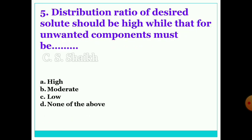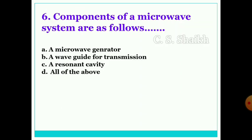Next question is: distribution ratio of desired solute should be high, while that for unwanted components must be how? You must try to predict the answer. Whether it will be high, low, moderate, or none of the above? So you must remember high and the other should be low for the unwanted component.